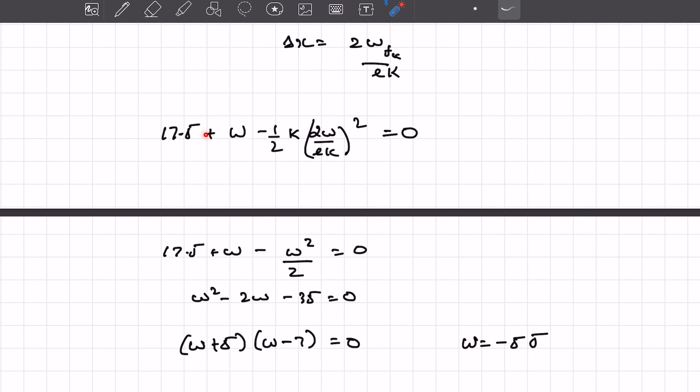You're getting two values of W. Now we assumed the work done by friction to be plus W, but we clearly know the work done by friction has to be negative. Therefore we'll choose this value, W equals minus 5. That is the work done by the friction in this case, or we could also say that's the heat that is lost to the surroundings. The answer to this problem is 5 joules.